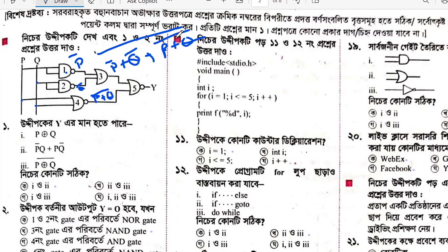Here we can write as columns. If you write at Q, it shows the columns: Q0, such as P0 into Q0.